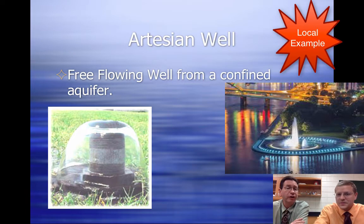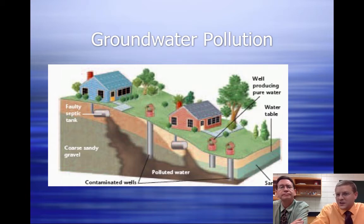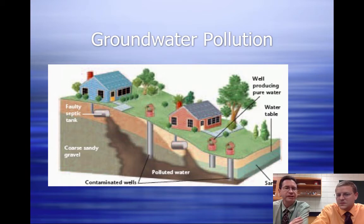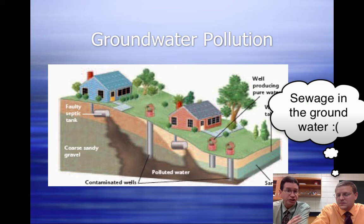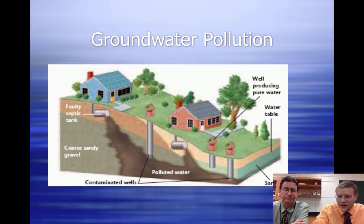It's all because of the pressure of that confined aquifer. One other thing to worry about if you're using well water is that it's susceptible to pollution. In this particular case, there's a septic tank from a house on top of the hill that's faulty. The sewage from that septic tank is seeping into the water supply, moving down the hill due to gravity and contaminating the wells below. If you are on well water, you definitely need to filter and purify that water before using it for drinking and washing.